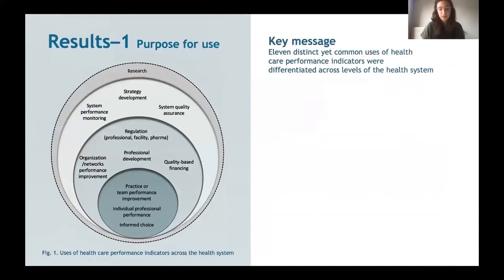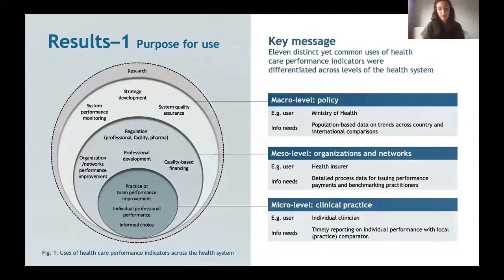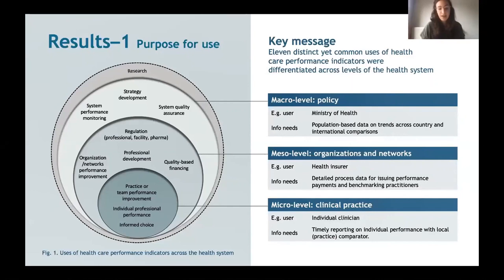In terms of our results, organized by our two research questions: first, on the uses of healthcare performance indicators, we identified 11 distinct and methodologically relevant purposes of use across the health system — from improvement in clinical practice at the micro level, to improvement of organizations and networks at the meso level, to policy uses at the macro level, and the cross-cutting research feed-in function. Importantly, within these levels, the uses of performance indicators were further specified, signaling the importance of clarity on the intended function an indicator serves. For example, at the micro level, uses of data by patients to inform their choices about health professionals are distinct from uses by an individual physician to improve their performance, and further still from physician teams to improve a practice.